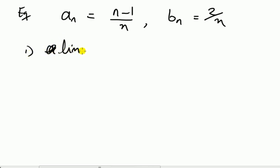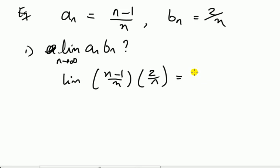Example. Let's have a_n equal to (n-1)/n. Let's have b_n equals 2/n. What is the limit of a_n times b_n as n tends to infinity? So what we do is we write down lim and then put these two things in. Then we use the rule that the limit of a product is the product of the limit. So I do lim (n-1)/n times lim 2/n like this.